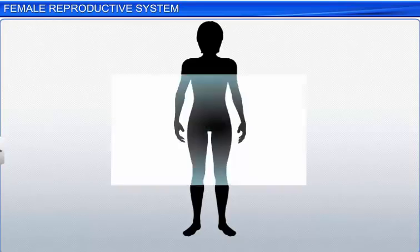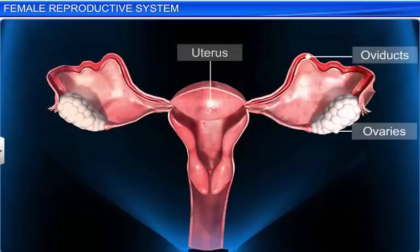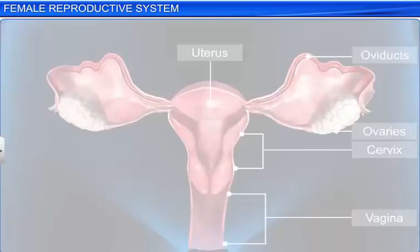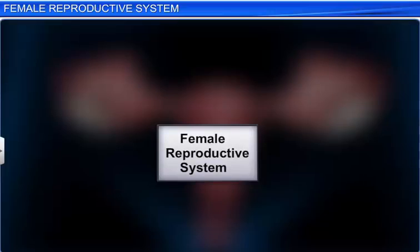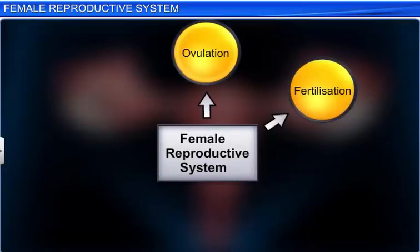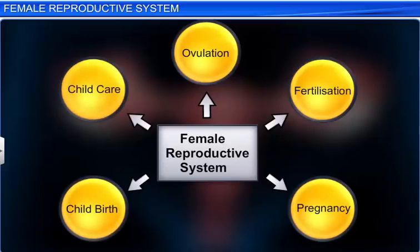The female reproductive system includes the ovaries, oviducts, uterus, cervix, vagina, and the external genitalia, located in the pelvic region. Along with a pair of mammary glands, it supports the process of ovulation, fertilization, pregnancy, childbirth, and child care.